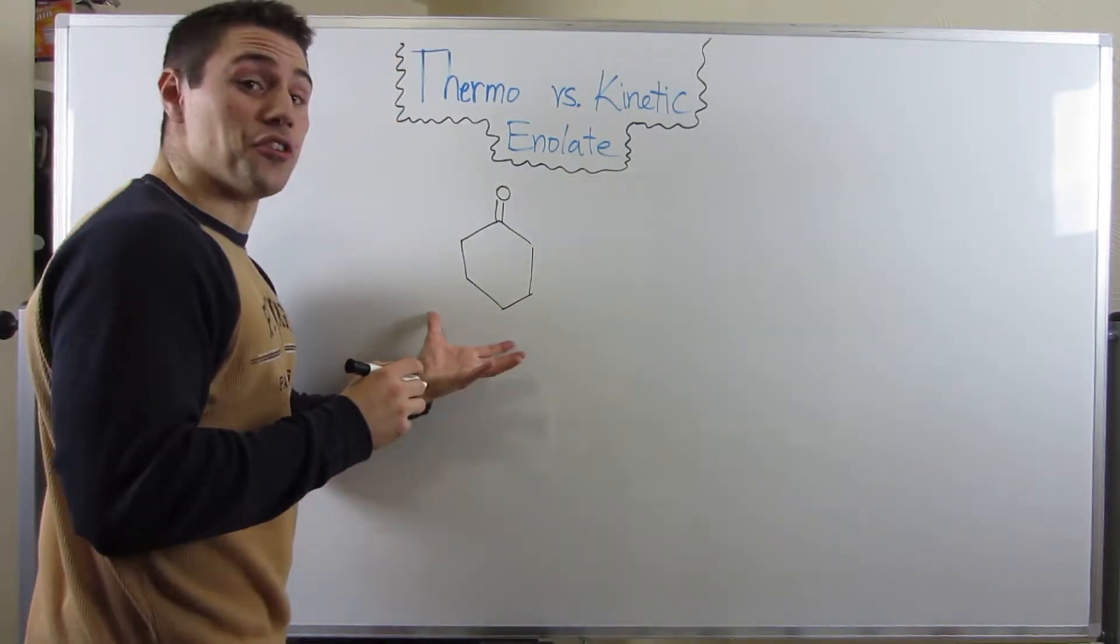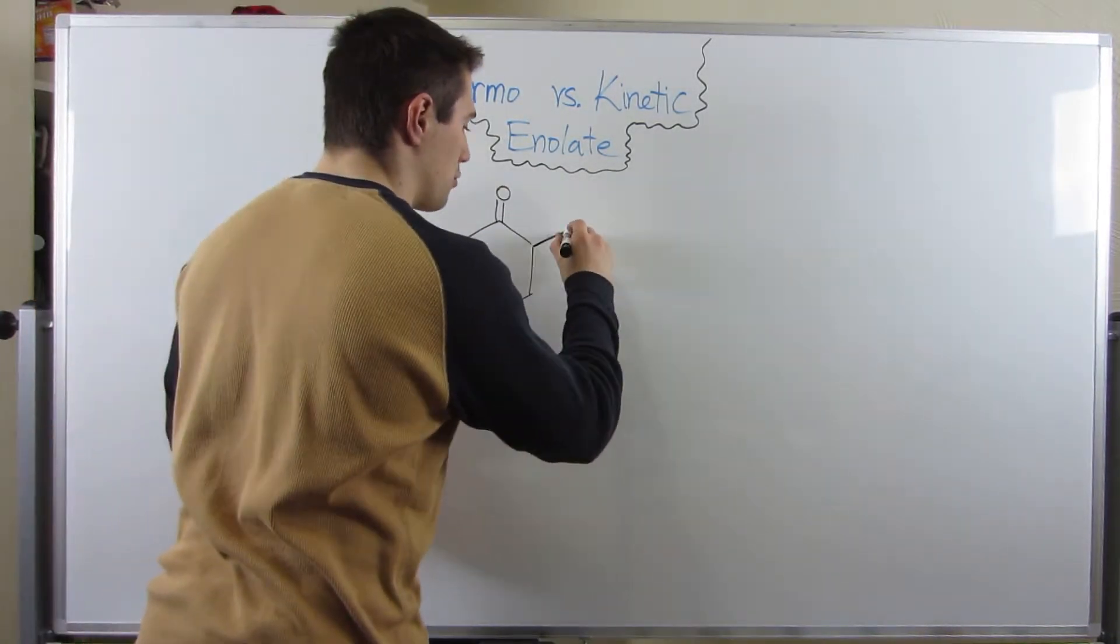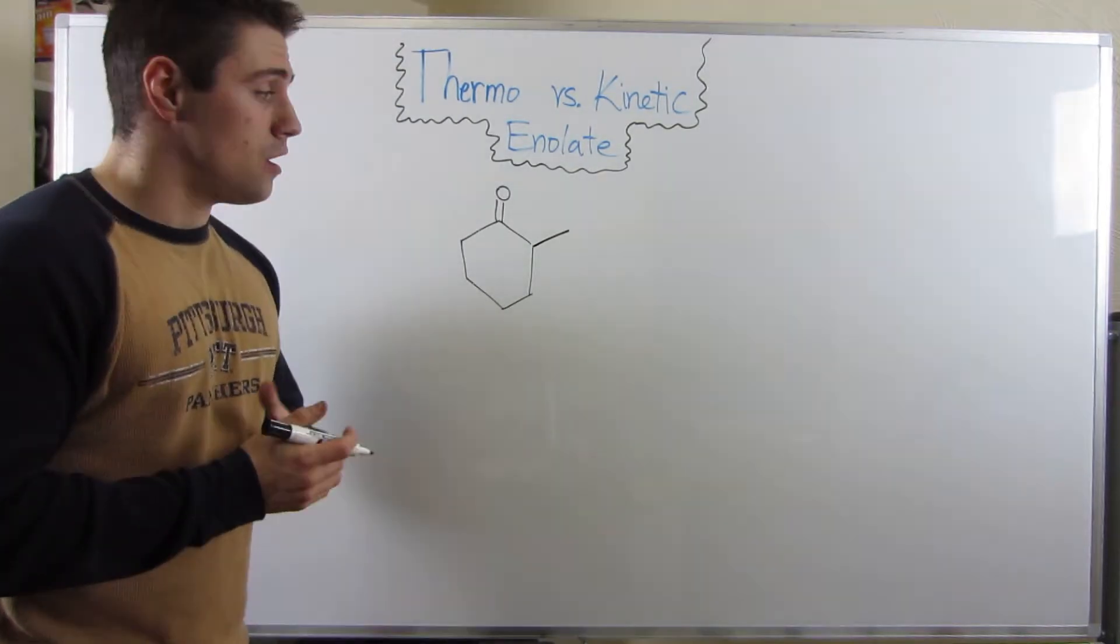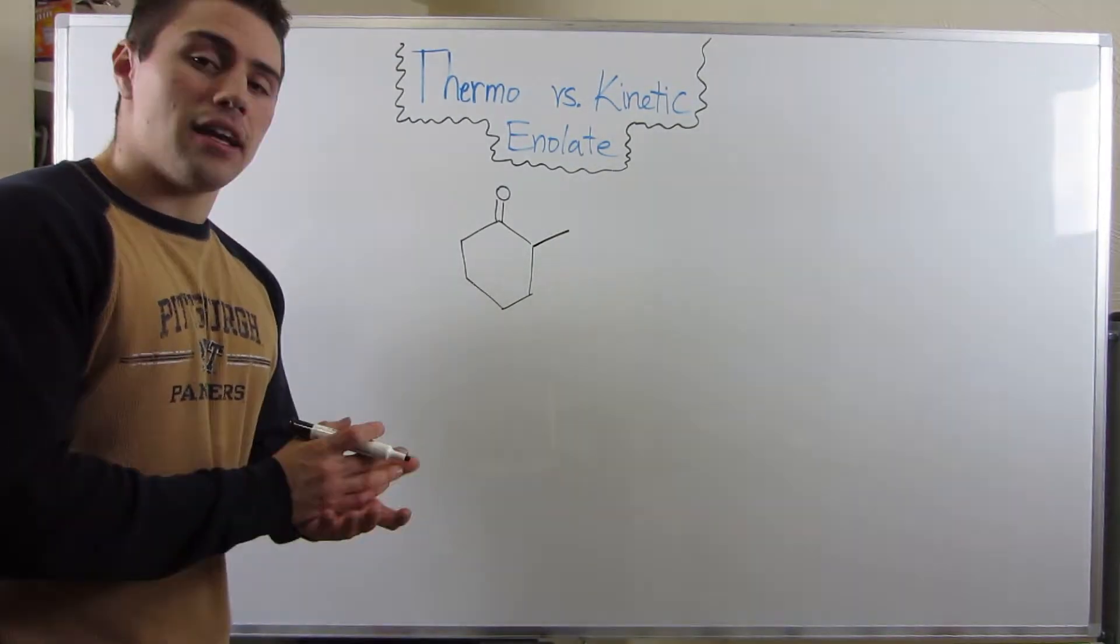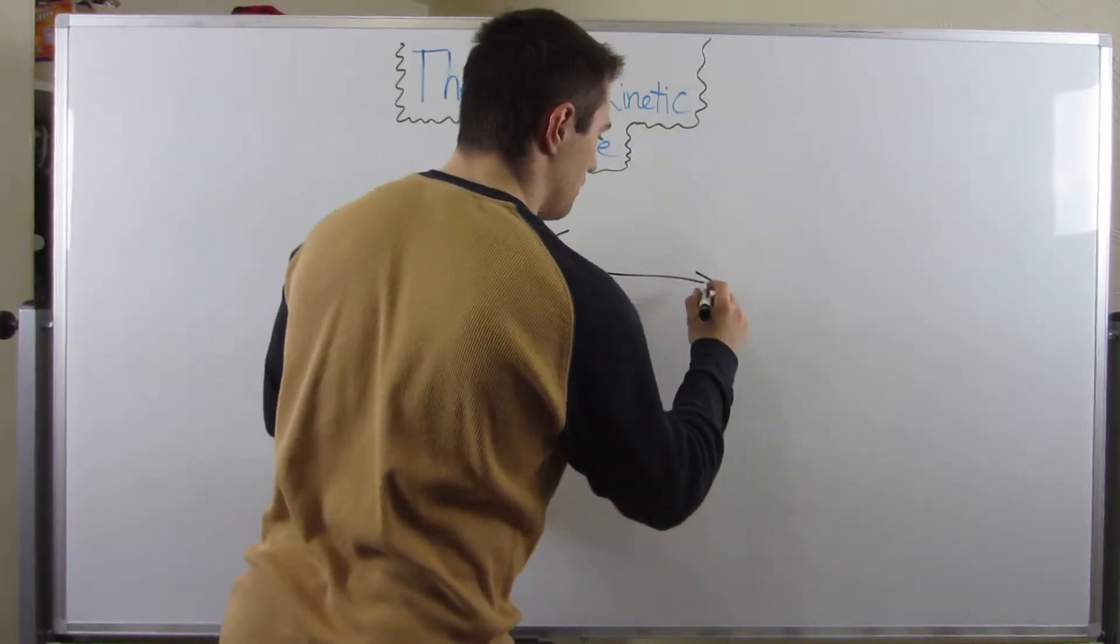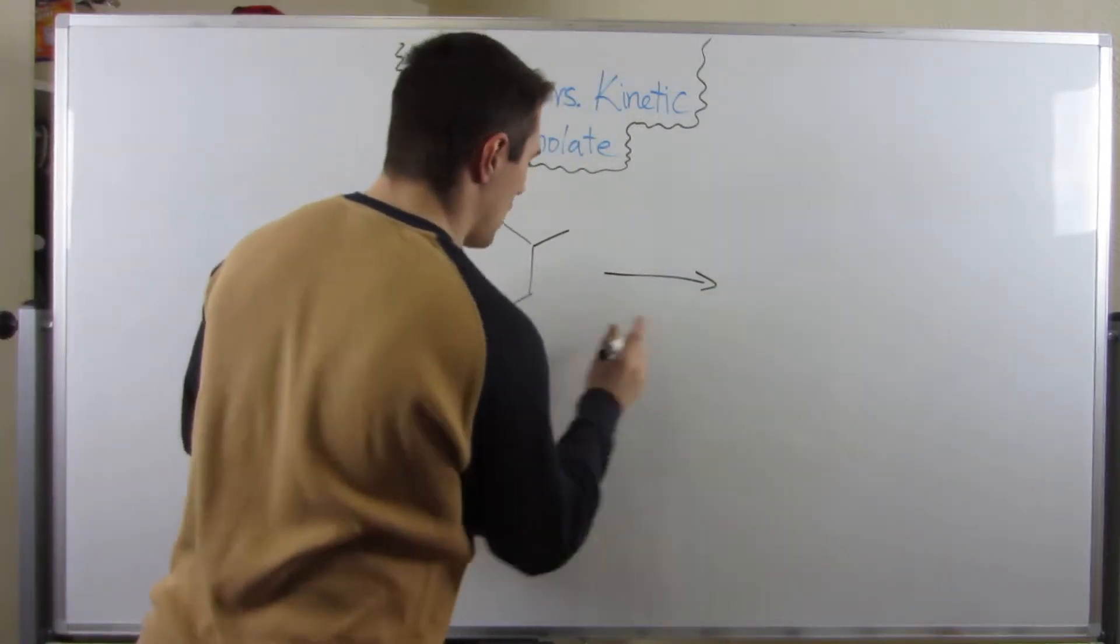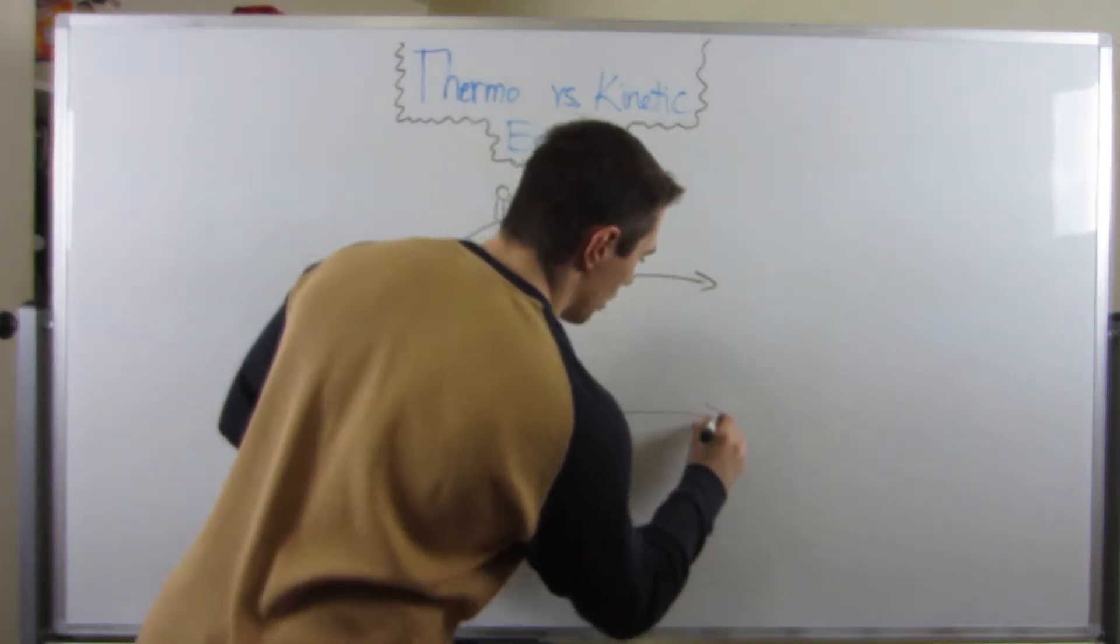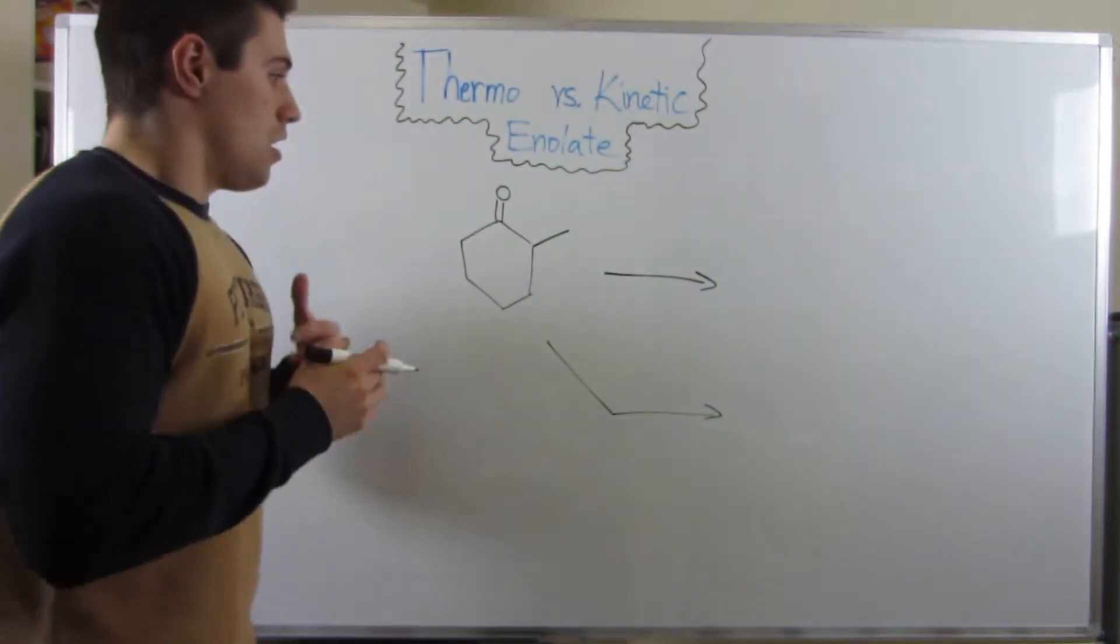Let's say we have this cyclohexanone, and I put a methyl group right here just to be difficult. What do we do? The answer is it depends on what base you use. Let me give you two scenarios.